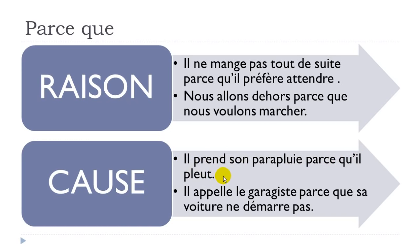Second example: 'il appelle le garagiste' — 'appeler' means to call, and 'garagiste' is the person who will fix your car if it's broken or doesn't start. 'Parce que sa voiture ne démarre pas' — 'voiture' means car, 'sa voiture' means his car (possessive), and 'ne démarre pas' is the negative form, 'démarrer' means to start. So: 'il appelle le garagiste parce que sa voiture ne démarre pas' — because his car doesn't start.